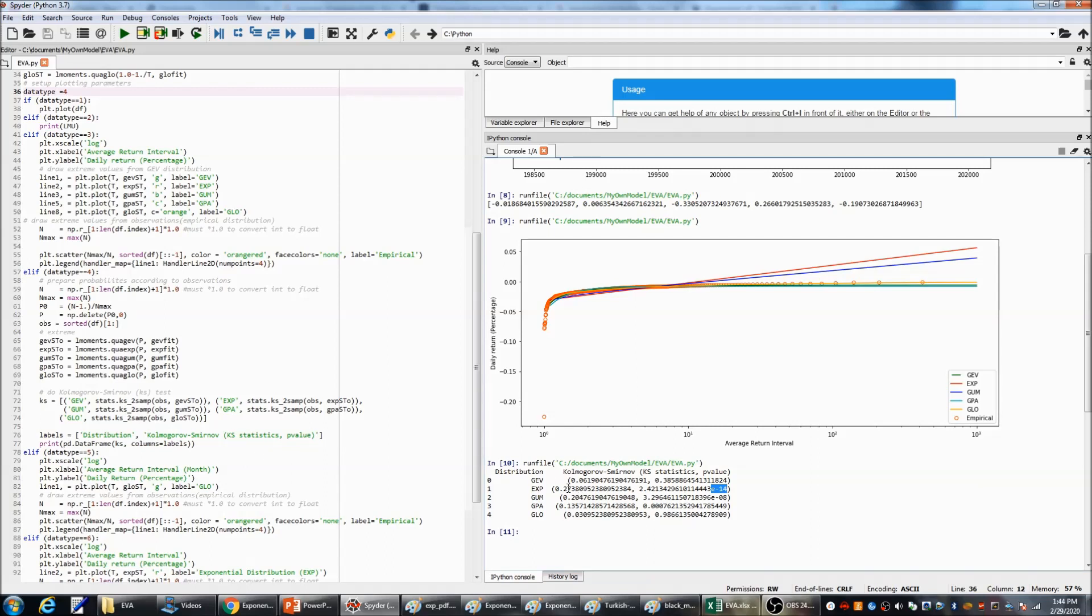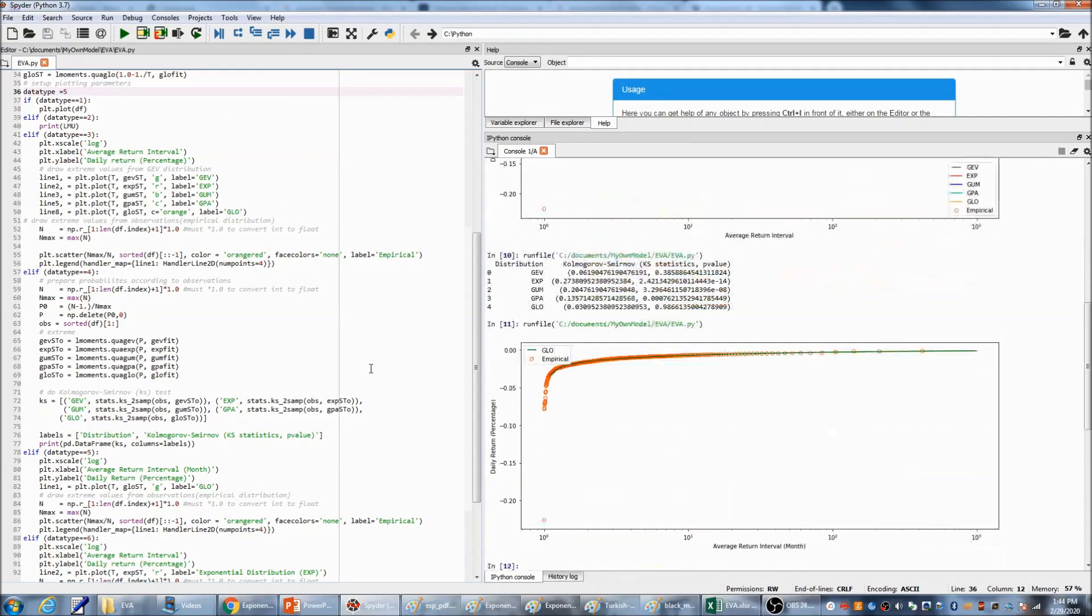Now, let's draw the graph separately. You can see this is for the generalized logistic distribution. It fits the data very well.